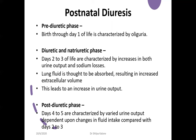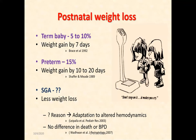The third phase is the post-diuretic phase, generally seen on day four to five, characterized by varied urine output depending on fluid intake changes compared to days two and three. Babies lose weight post-birth due to this fluid shuffling and diuresis. Term babies lose around 5–10% of weight by 7–10 days, and premature babies may lose up to 15% by approximately 10–14 days. Weight gain in term babies starts by day 7–10 and in preterm by 14–21 days.